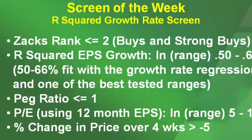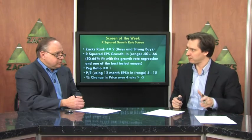Screen parameters: I'm looking at companies with a Zacks Rank of less than or equal to 2 — so buys and strong buys. The R-squared EPS growth rate range is between .50 and .66, which means a 50% to 66% fit with the growth rate regression — one of the best-tested ranges. I'm also looking for a PEG ratio less than or equal to 1, a PE using 12-month EPS within a range of .5 to .15 for low multiples, and percent change in price over the last four weeks greater than -5%, so it cannot have fallen more than 5%. Stock price must be greater than $5 and volume greater than or equal to 100,000 shares.